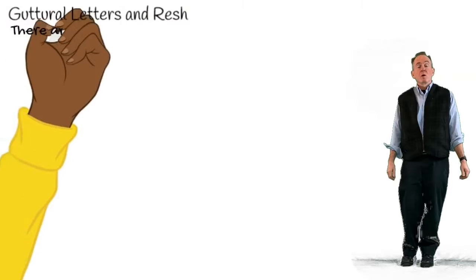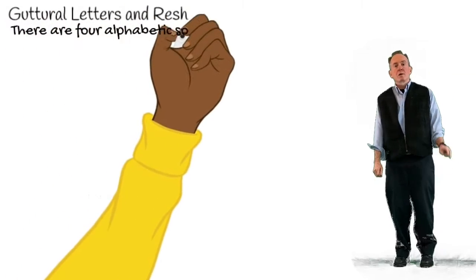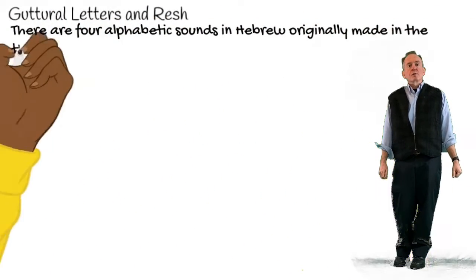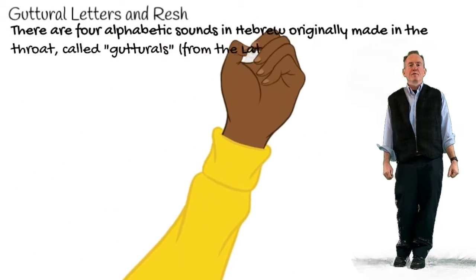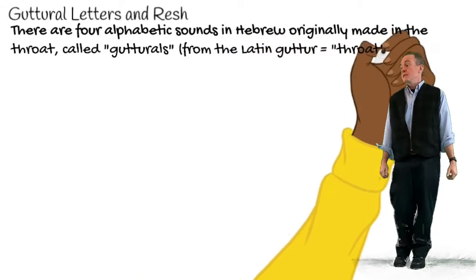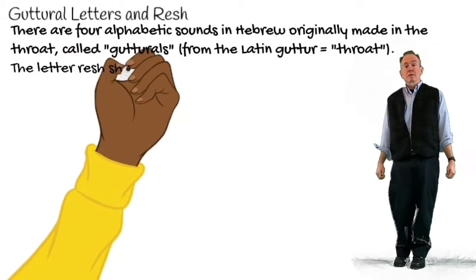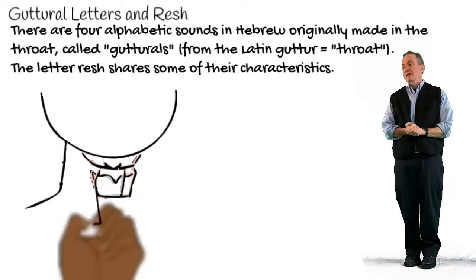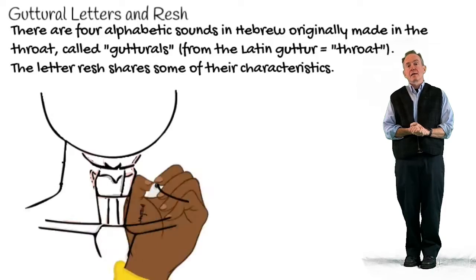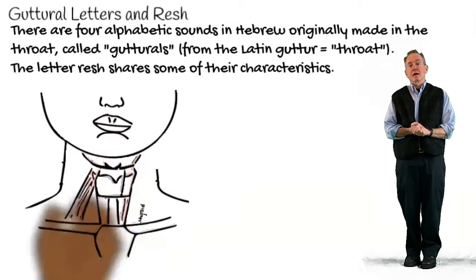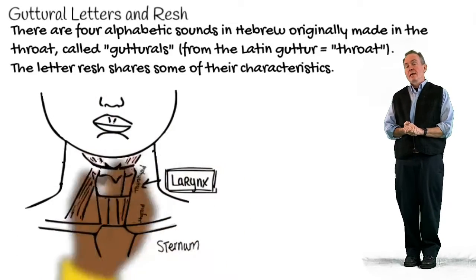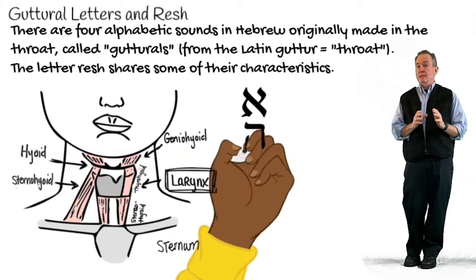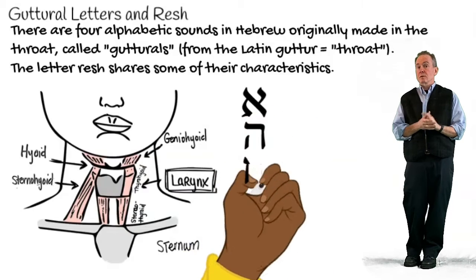Stephen Cook here. Welcome to our second winter Hebrew review. Today we're going to talk about the gutturals and the reish. There's aleph, hay, het, ayin, and then reish also often acts like one of these guttural letters.